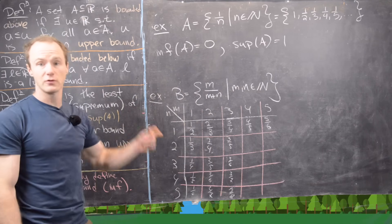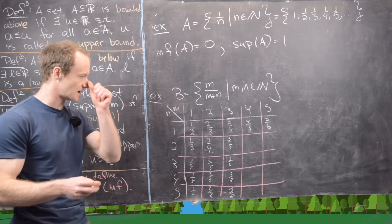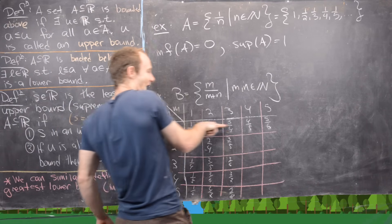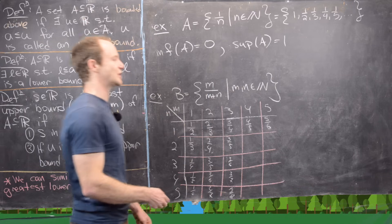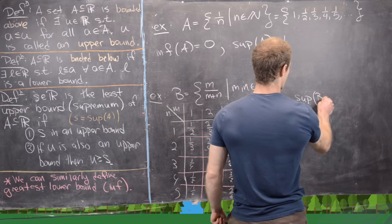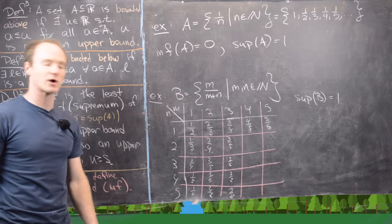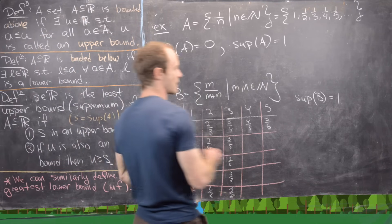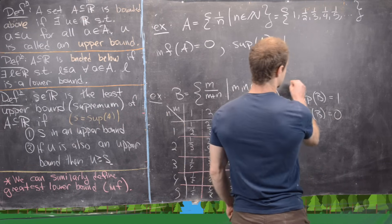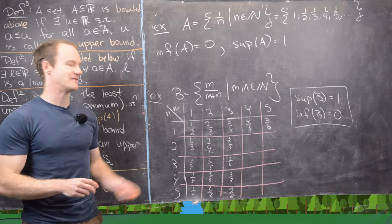Without formal proof — we really just want to build intuition here — notice that as we go along the rows, the values approach 1. So a good guess is that the supremum of B equals 1. And if we go down a column, values approach 0, so the infimum of B equals 0.